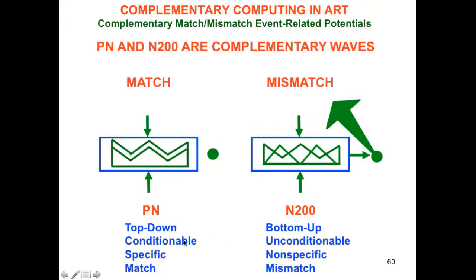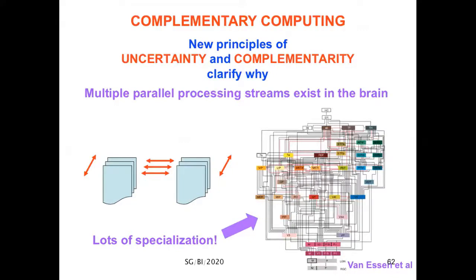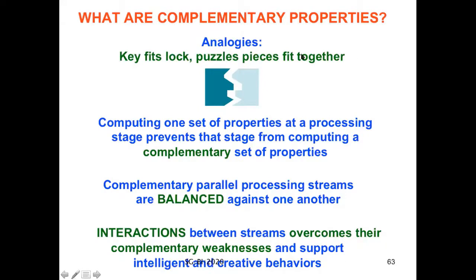Complementary computing is another paradigm that I introduced, which explores what's the nature of brain specialization. Complementary computing asserts new principles of uncertainty and complementarity that clarify why there are multiple processing streams in the brain with multiple processing stages to realize a kind of hierarchical resolution of uncertainty, as this famous macro circuit of the visual system illustrates from the laboratory of David Van Essen. What are complementary properties? Let's start with analogies: a key fitting its lock or puzzle pieces fitting together.